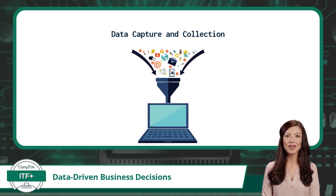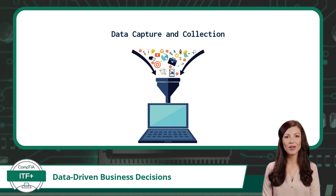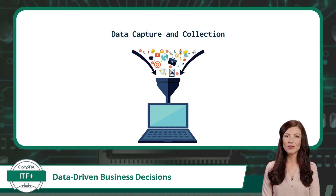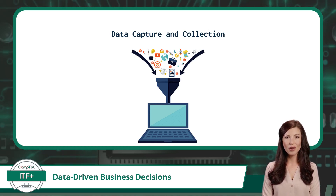The first step to making any informed decision is to collect data. A computer can collect data from input devices, other computing devices, or software programs. In reality, this list is endless. This data is then stored in storage drives as raw data, in databases, or large-scale data warehouses and data centers.